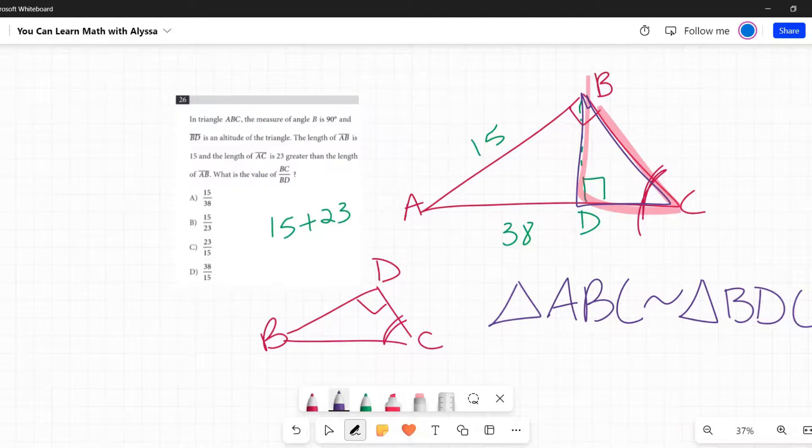Once you have this similarity statement, you can very easily set up proportions just by saying what corresponds. So A is to B as B is to C, first to second is second to third, is the same as B to D to D to C. You can set up these proportions very straightforward, very easily. So what are they telling us here?